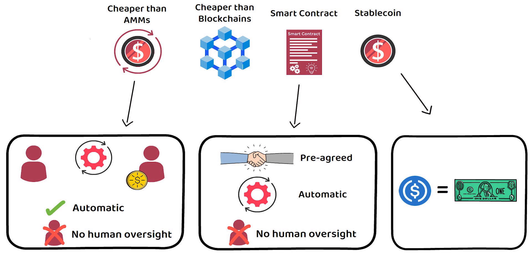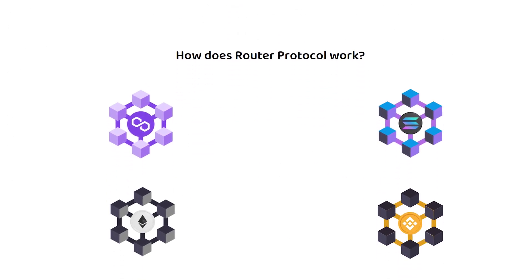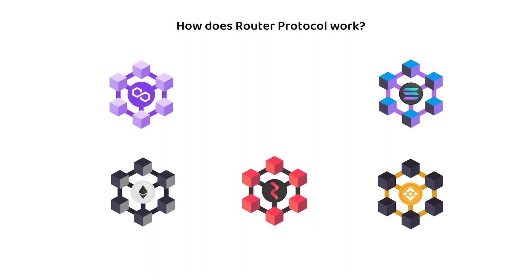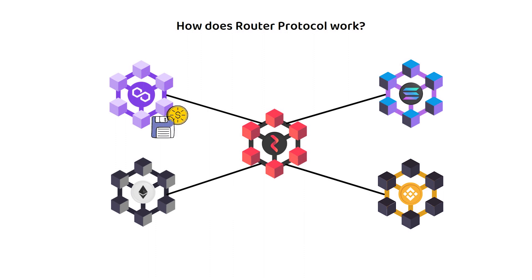But how does Router Protocol work exactly? Router Protocol is a multi-directional bridge that connects many layer 1 and layer 2 blockchains which then allows for data and assets to be transferred between them.